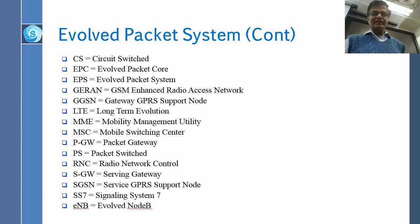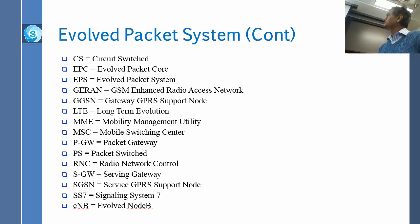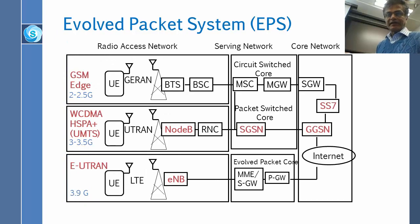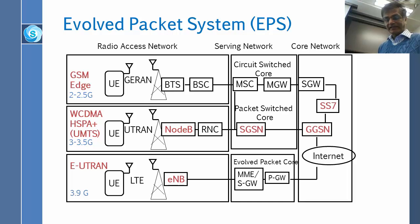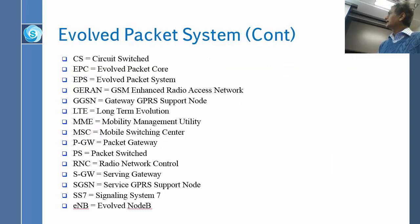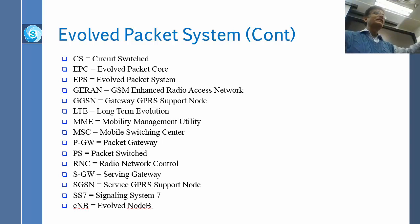Here are all the acronyms. CS is Circuit Switched. EPC is Evolved Packet Core, Evolved Packet System. GERAN, SGSN, LTE. MME is Mobile Management Entity — it handles handover management. MSC is Mobile Switching Center. We know Radio Network Controller. S1, SS7, eNB — everything we have done except for 3.9G.